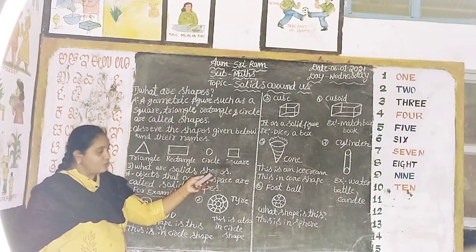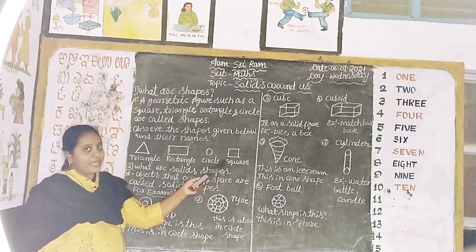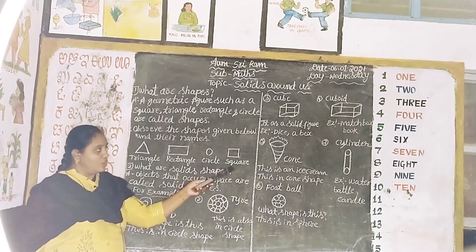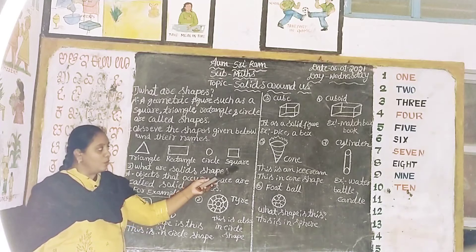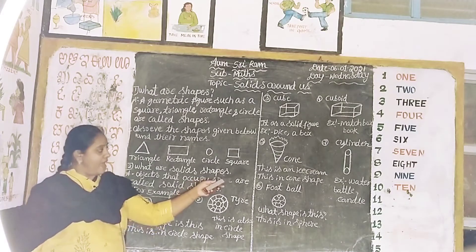What is this? This is a square. What is the spelling of square? S-Q-U-A-R-E. Square.